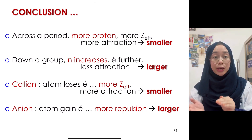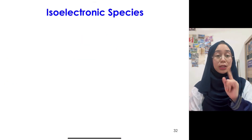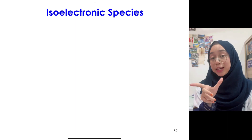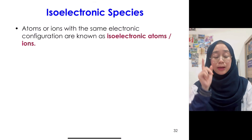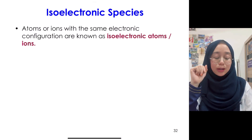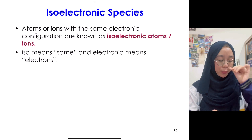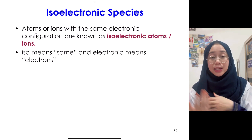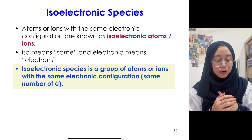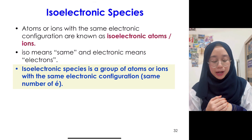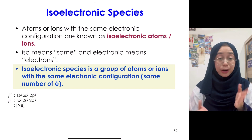Now, what if we compare ion to ion? Before we do that, let me introduce the term isoelectronic. Isoelectronic species are atoms or ions with the same electronic configuration — 'iso' means same, 'electronic' refers to electrons. Isoelectronic species is a group of atoms or ions with the same electronic configuration or the same number of electrons.